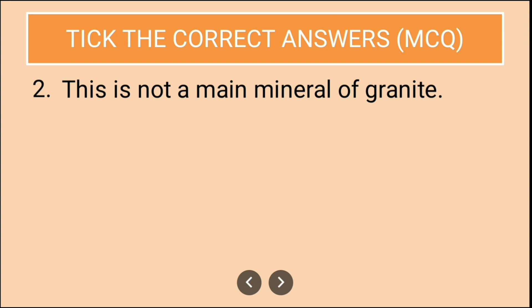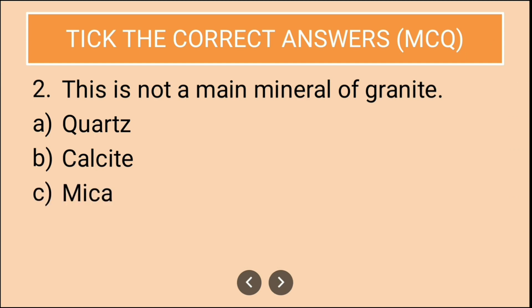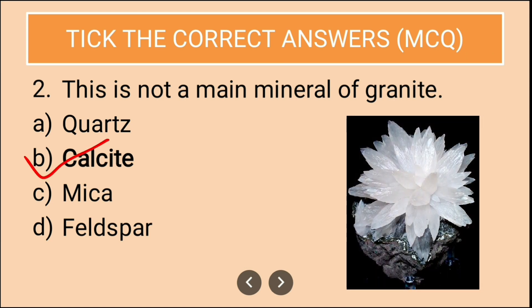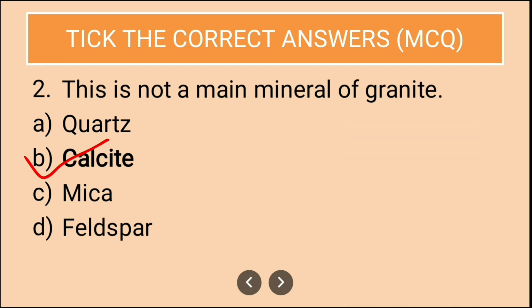Question two: This is not a main mineral of granite. The options are quartz, calcite, mica, feldspar. The answer is calcite. Calcite is not the main mineral of granite; however, quartz, mica, and feldspar are the main minerals of granite.